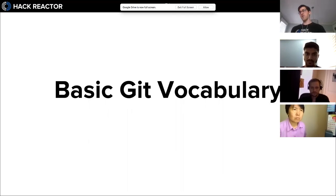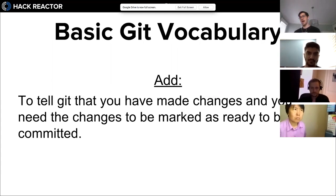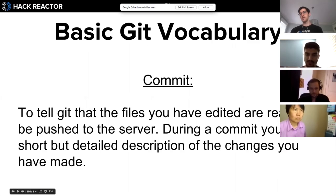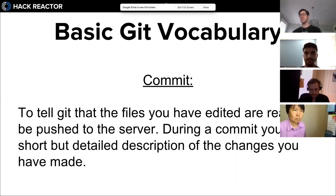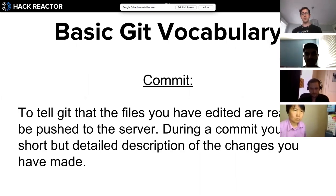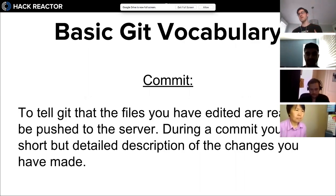Some basic git vocabulary: 'add' - you use the add command to tell git that you've made changes and those changes need to be marked as ready to be committed. 'commit' - you use the commit command to tell git that the files you've edited are ready to be pushed up to the server, in our case GitHub. During a commit you add a short but detailed description of the changes you've made, so that other people looking at the commit history can see what changes were made.